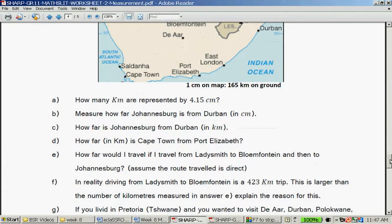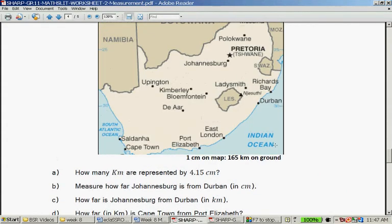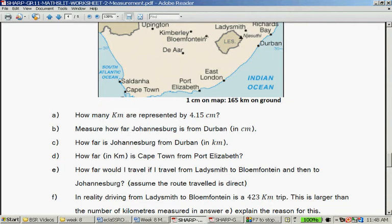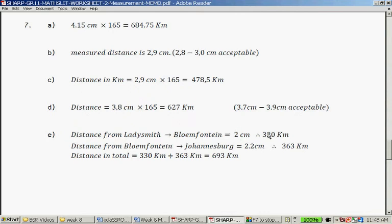How far would I travel from Ladysmith to Bloemfontein and then to Johannesburg? Ladysmith, Bloemfontein, Johannesburg. So, you first measure from Ladysmith to Bloemfontein and then from Bloemfontein to Johannesburg. So, it's 2 centimeters. 2 times 165 is 330 kilometers. Bloemfontein, Johannesburg is 2.2 centimeters. That's 363. If I add them together, I get 693 kilometers.